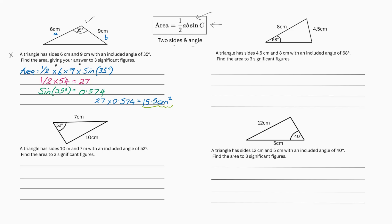Now to break it down. 6 times 9 is 54. A half times 54 or 54 divided by 2 gives us 27. Then we can do sin 35 which gives us 0.574. All you've got to do then is times it out so it's 27 times 0.574 equals 15.5cm squared.